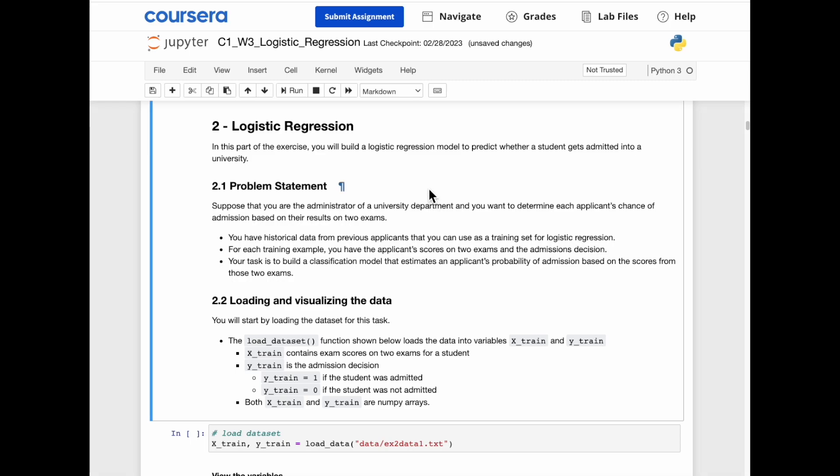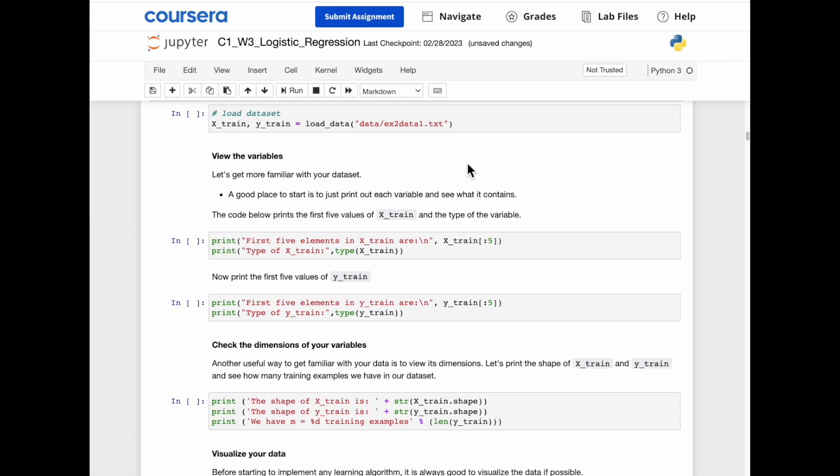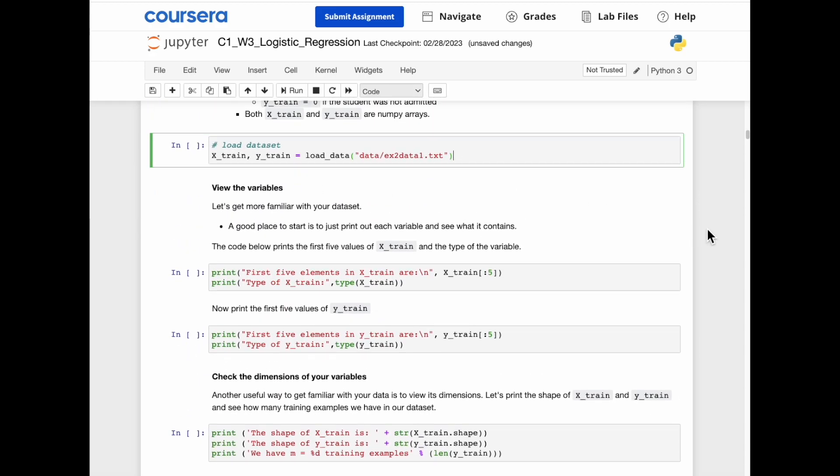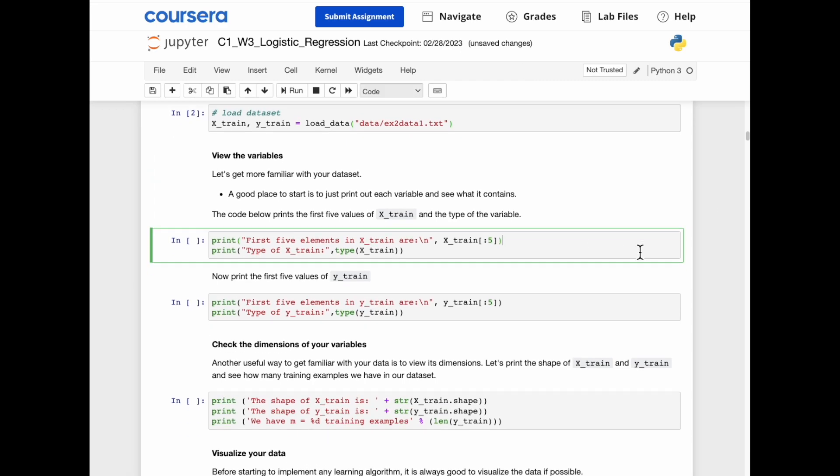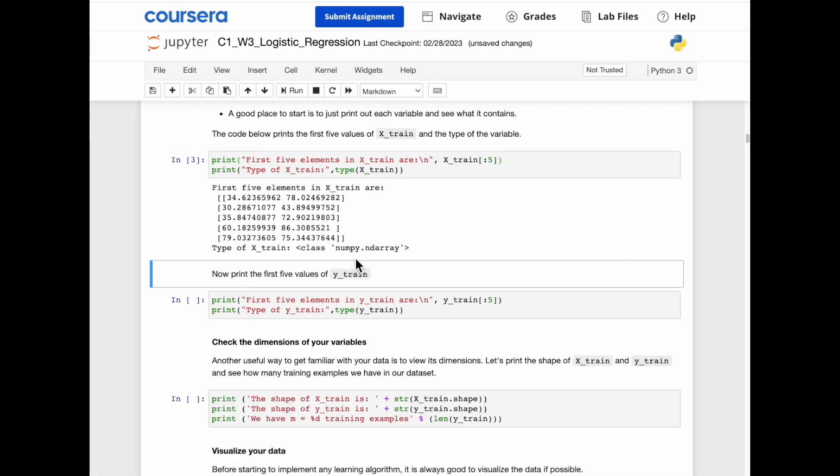In this first part of the exercise, we're going to build a logistic regression model to predict if a student gets into a university or not. First, we're going to load our data set into x-train and y-train. Then, view our variables. So the first five elements of x-train look like this, and the type is a numpy.ndarray.